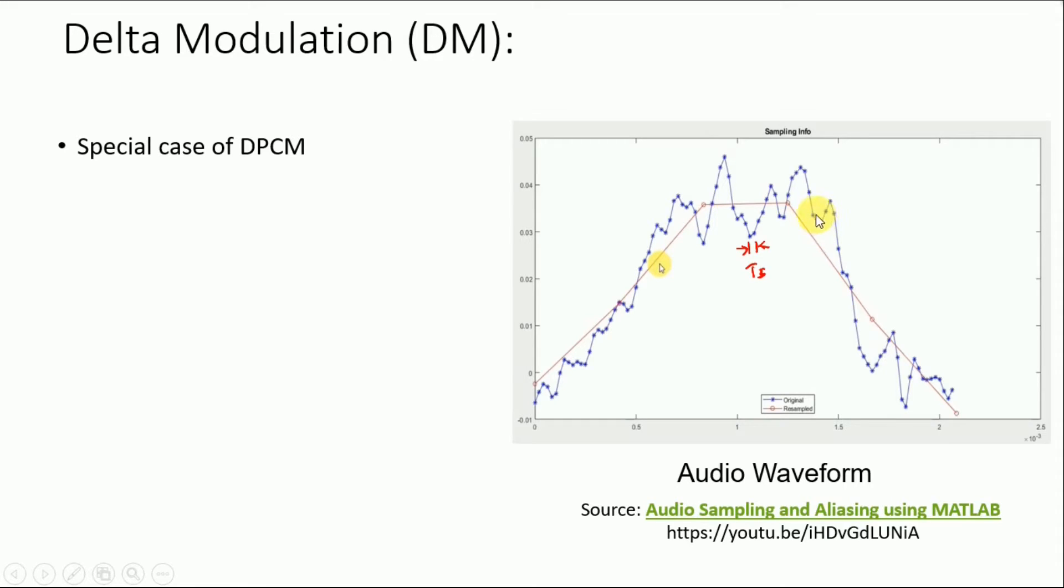So we can take the difference of these samples and then we can quantize that difference, and that is going to give us a result in which we will have less number of quantization levels and moreover we can improve the SNR. So presently, the Delta modulation is simply a special case of DPCM.